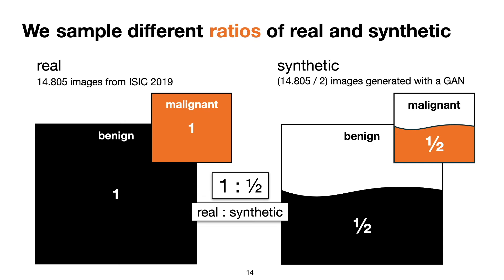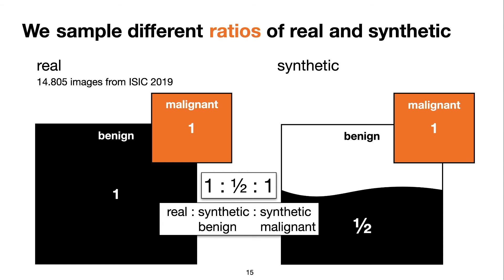We also study using different ratios of real and synthetic images. Here we have a representation of the augmented dataset: on the left we have the real part, and on the right the synthetic part, both already divided into benign and malignant. In most of our experiments, we add synthetic images without changing the class balance of the dataset — for example, for every two real benign lesions, we add one synthetic benign, and the same repeats for malignant lesions. However, due to the unbalanced nature of our data, we also try to increase the proportion of malignant lesions — for every malignant in the real dataset, we add one synthetic malignant, but for benign we only use one synthetic every two real ones.